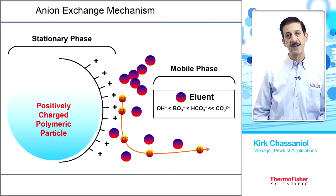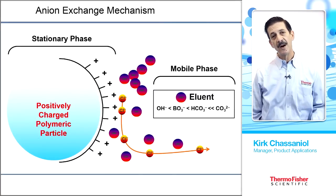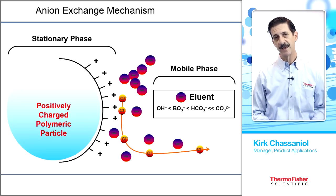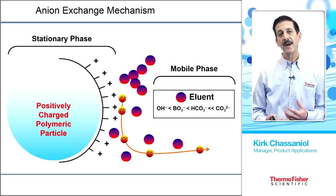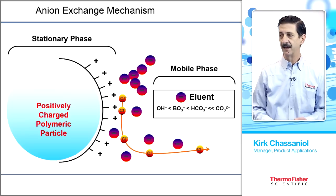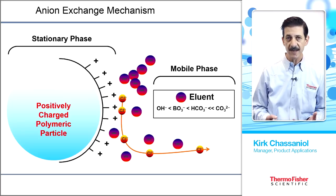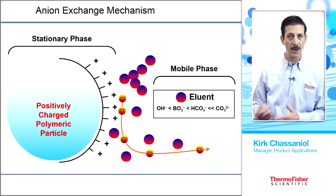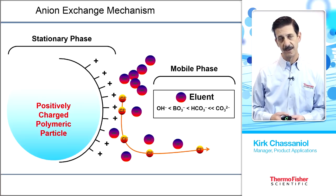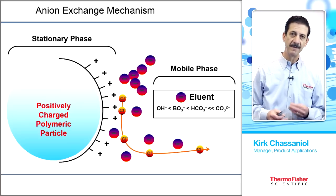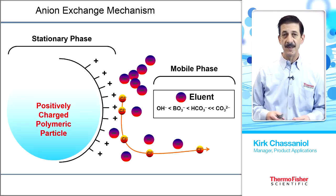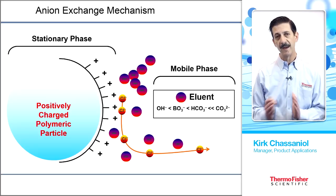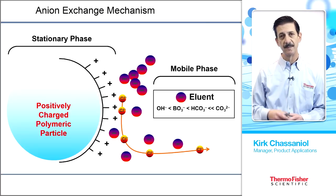Here is a depiction of an ion exchange mechanism. Our analyte of interest — in this case chloride — has a certain affinity for the anion exchange sites on the resin material. Chloride is then displaced by the eluent ion. In most cases we use hydroxide as the pusher ion in an IC separation, though you can also use mixtures of carbonate and bicarbonate as well as tetraborate. The eluent ion is present at much higher concentrations, and as the analytes move the length of the column, they band together and come off as a peak.